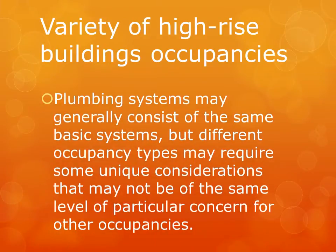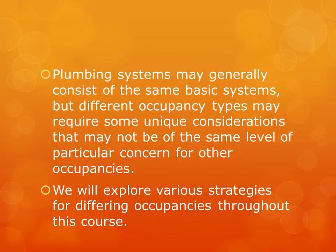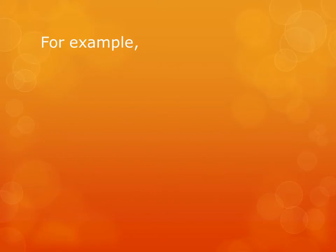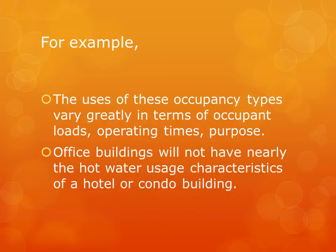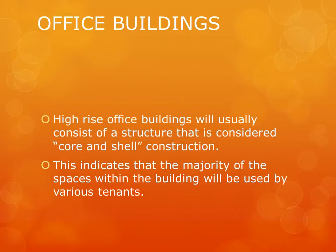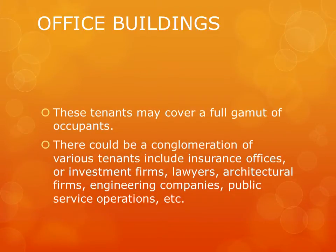There are a wide variety of high-rise building occupancies. Plumbing systems may generally consist of the same basic components, but different occupancies may require different considerations. Occupancy types vary greatly in terms of occupant loads, operating times, and purpose. Office buildings will not have nearly the hot water usage that you would find in a hotel or condo building. High-rise office buildings usually consist of core and shell construction — the majority of spaces will be used by various tenants.